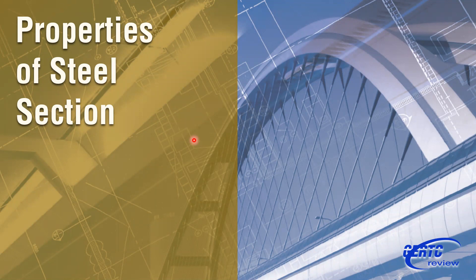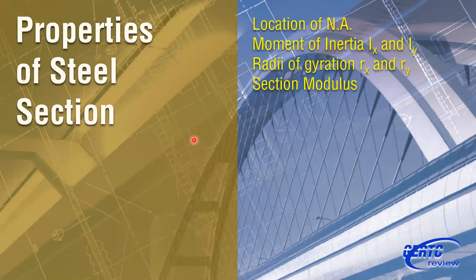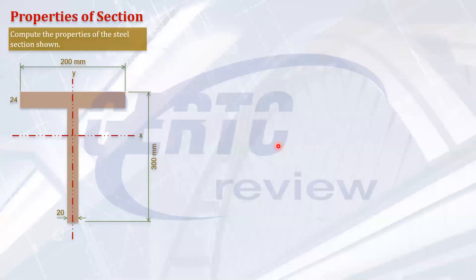Today we will discuss how to get the section properties of a steel beam, column, steel sheet, or any other steel or timber section. This can also be a wooden section or any other shape — it doesn't matter whatever shape it is.